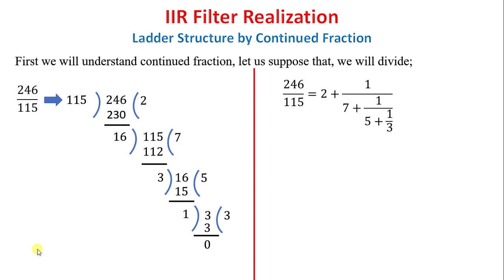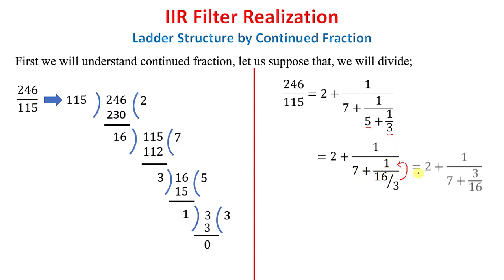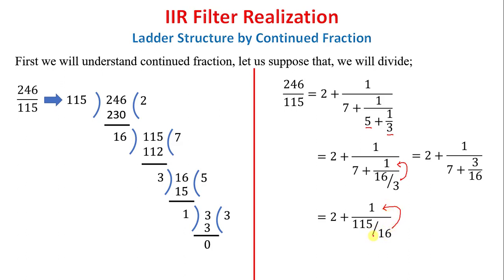You may write this division in continued fraction format. Now we can check by reverse method: 3 times 5 is 15, plus 1 is 16, so 16 by 3. Then 3 over 16 — again 16 multiplied by 7 plus 3. This value is 2 plus 1 upon 1. Then 15 by 16, which gives 16 divided by the next value — and this value is solved, confirming the continued fraction representation.